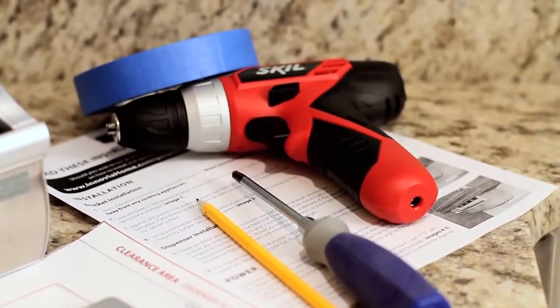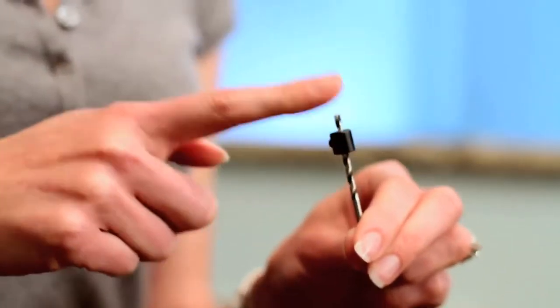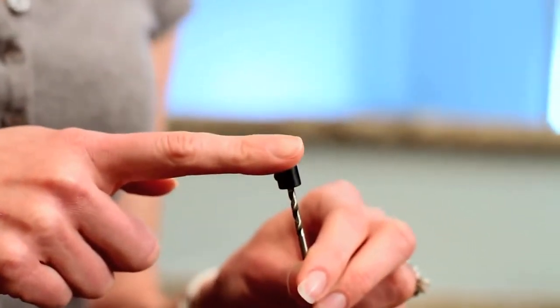You can also use a cordless drill, which I'm using today for this demonstration. Now since my cabinets are a half inch thick, I'm going to use these drill stops. You can get these at any hardware or home improvement store.